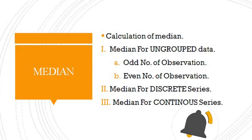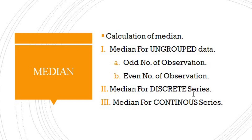Calculation of median for ungrouped data is made upon two cases: odd number of observations and even number of observations, with separate formulas for each. Then there is median for discrete series, and third, median for continuous series.